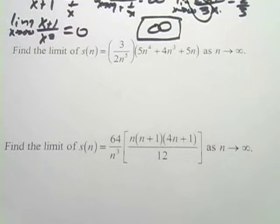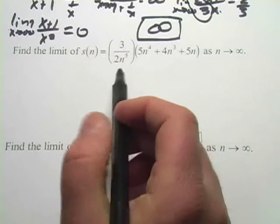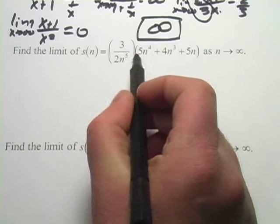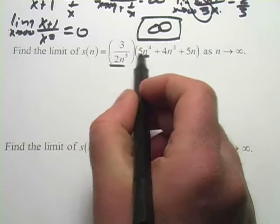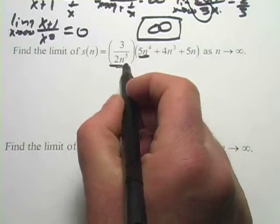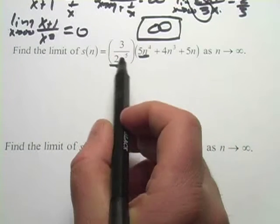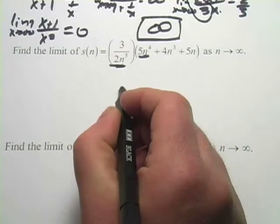Let's look at this next one. Same problem. On the top, we have 5 to the fourth as our highest power. On the bottom, we have, sorry, n to the fourth as our highest power. On the bottom, we have n to the fifth. That's the higher power on the bottom. So the limit here would be zero.